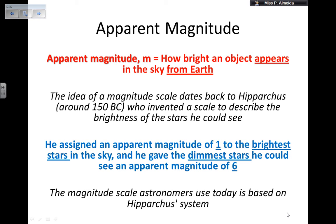Apparent magnitude is known with the symbol of a lowercase m, and it is by definition how bright a star or an object appears in the sky as viewed from Earth.